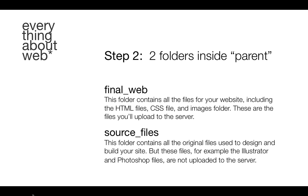Step two is to create two folders that you're going to place inside of this parent folder. One of the folders should be called final_web — notice the underscore between final and web. That is important; you don't want to have any spaces. This folder contains all the files for your website, including all of your HTML files, your CSS file, and your images folder, which contains all of your images. These are all the files that you're going to upload to the server when you launch or test the site.